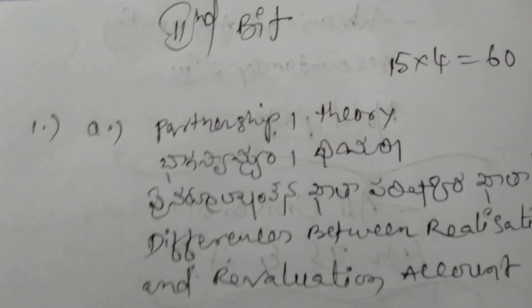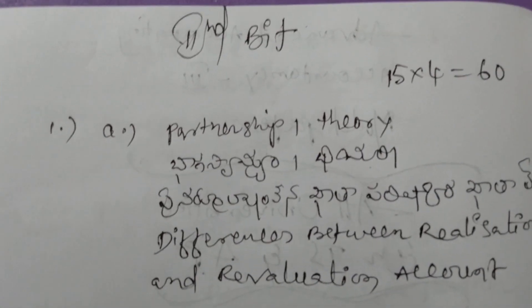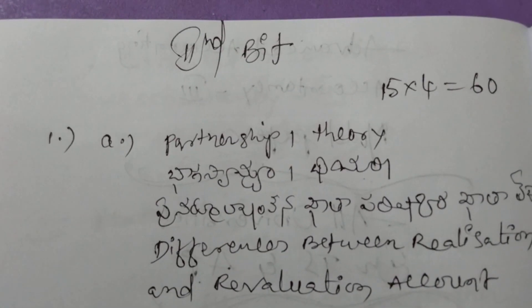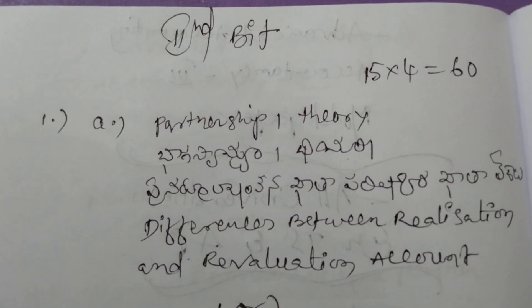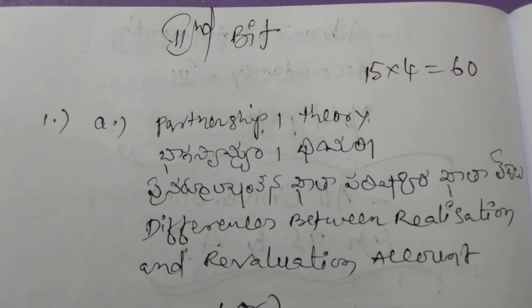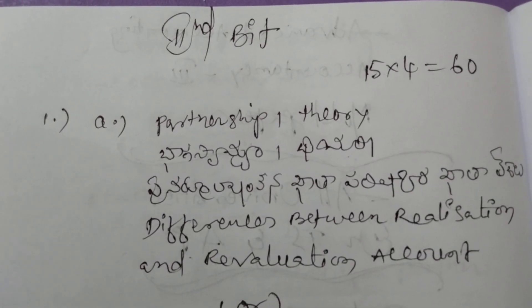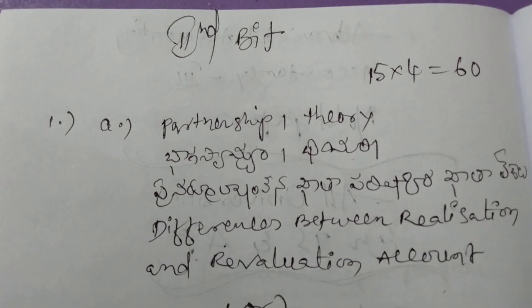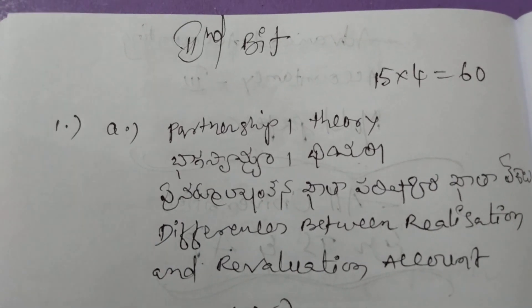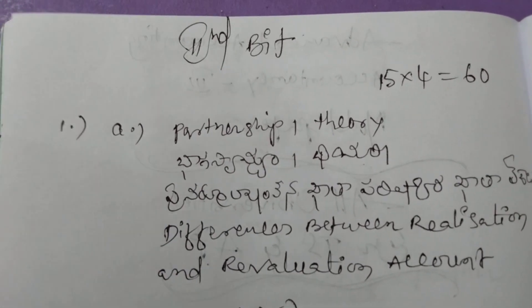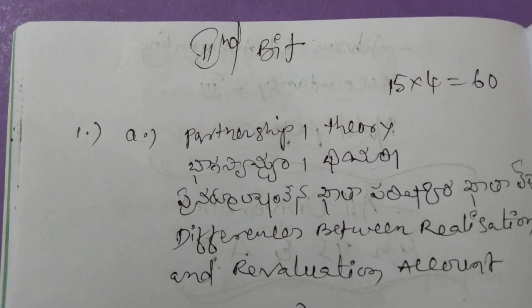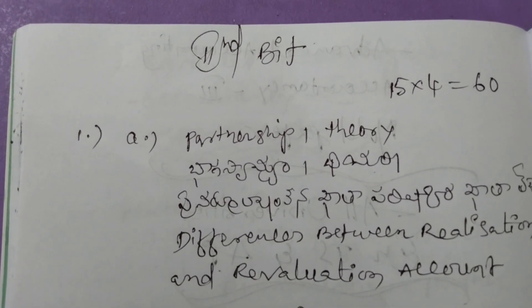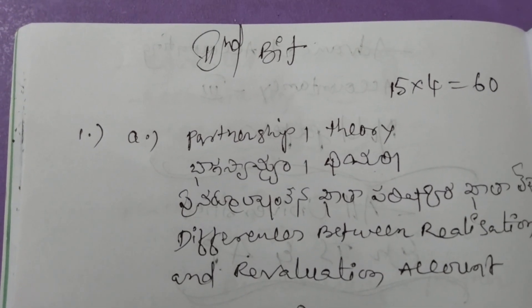So second bit. The second bit is for long questions. In the second bit we have four questions. Each question carries 15 marks. So 15 marks into 4 equals 60 marks.